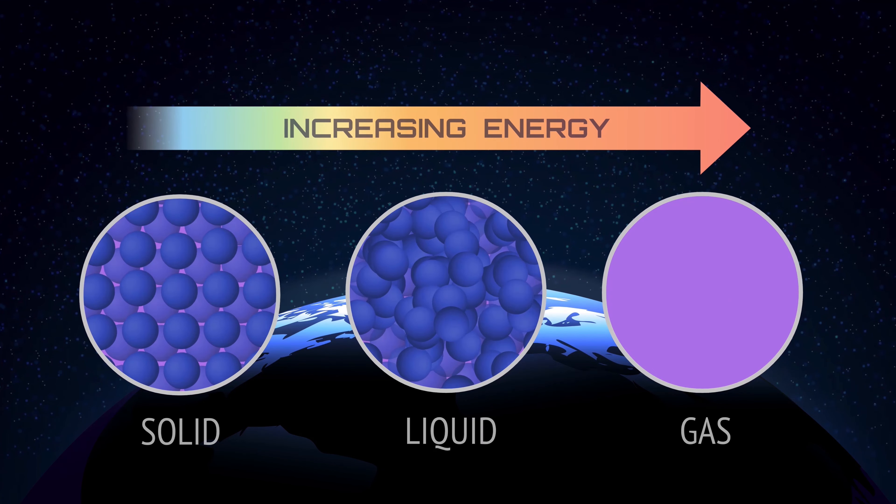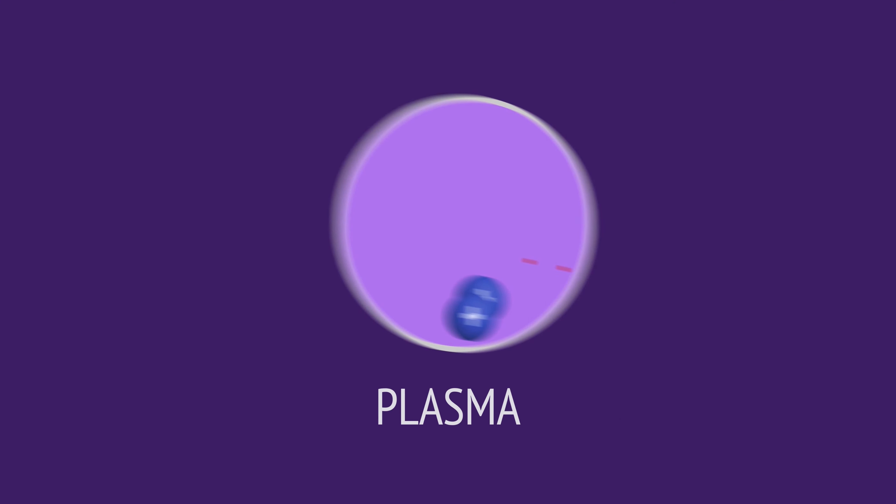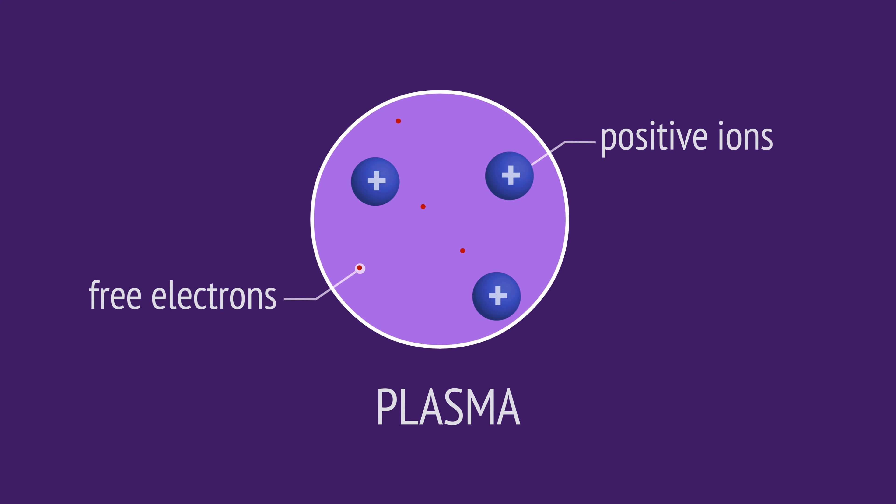At even higher energies, a fourth state of matter, called plasma, can exist. Plasma is an ionized gas where electrons have been stripped from the atoms, resulting in positively charged ions and free electrons.